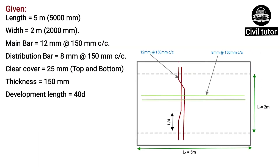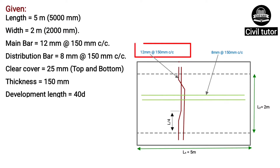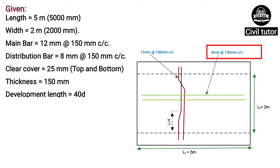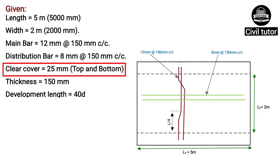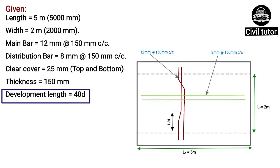So we have the given data as: length of slab is 5m (5000mm), width of slab is 2m (2000mm). The slab is provided with main bars of size 12mm spaced at 150mm center to center, and distribution bars of size 8mm also spaced at 150mm center to center. The clear cover is taken as 25mm at top and bottom of the slab. The thickness of slab is 150mm and the development length is equal to 40d.